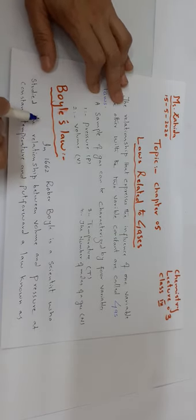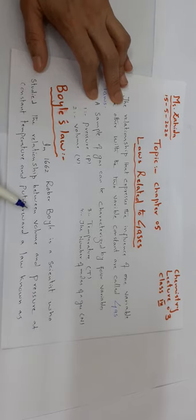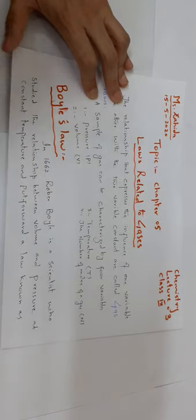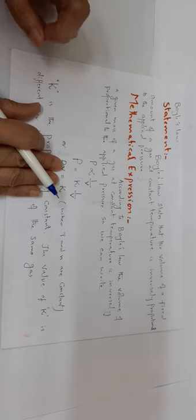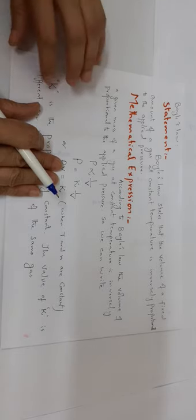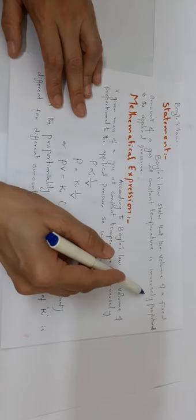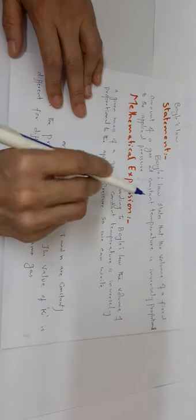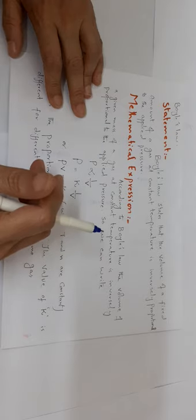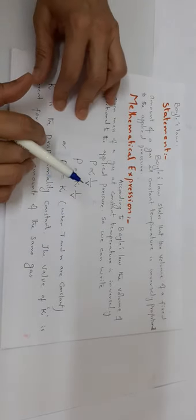For example, if we keep temperature and number of moles constant, we check the relationship between pressure and volume. The next law we will discuss is Boyle's Law. In 1662, Robert Boyle studied the relationship between volume and pressure at constant temperature. The law states that the volume of a fixed amount of gas at constant temperature is inversely proportional to the applied pressure — meaning if you increase the pressure, the volume decreases, and if you decrease the pressure, the volume increases.